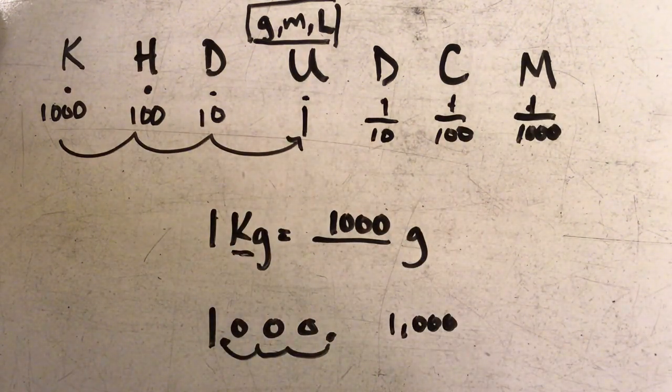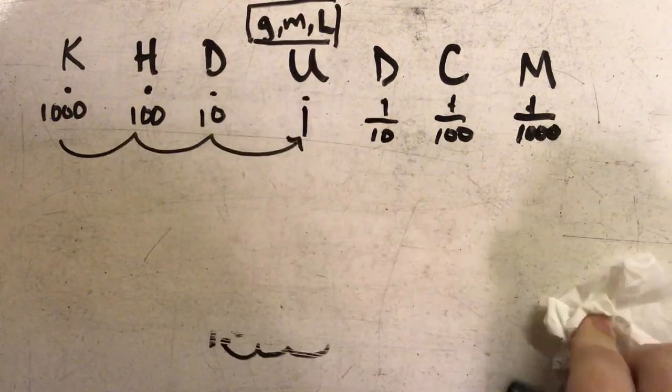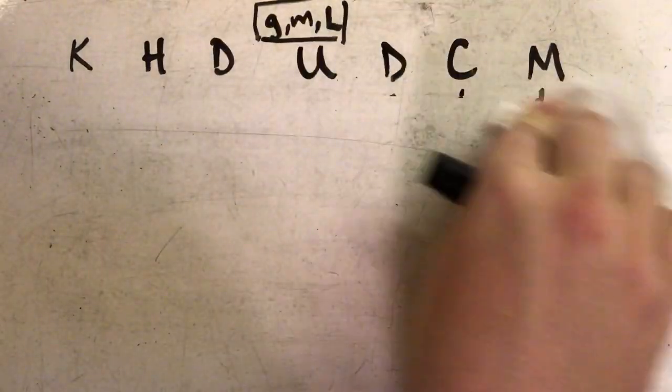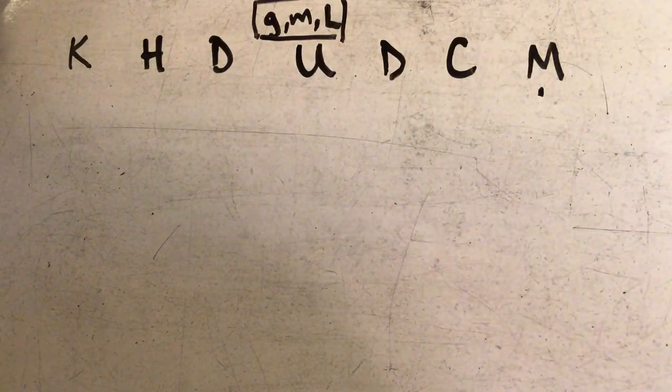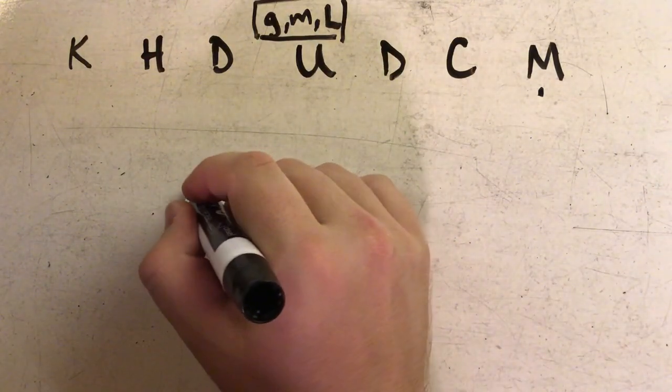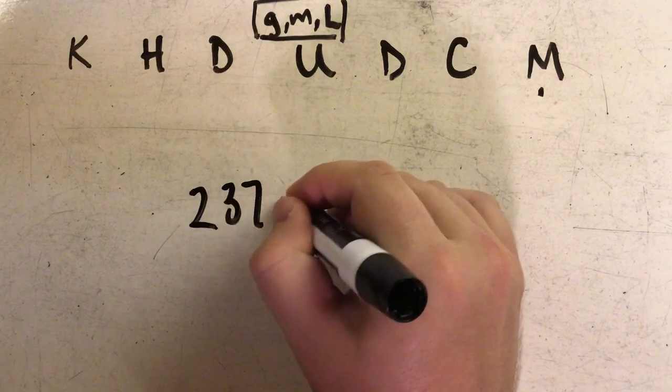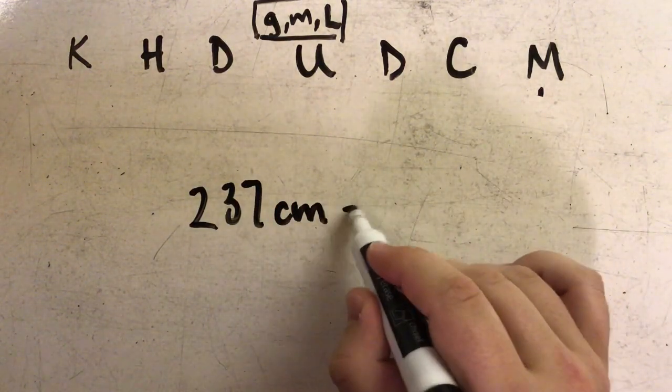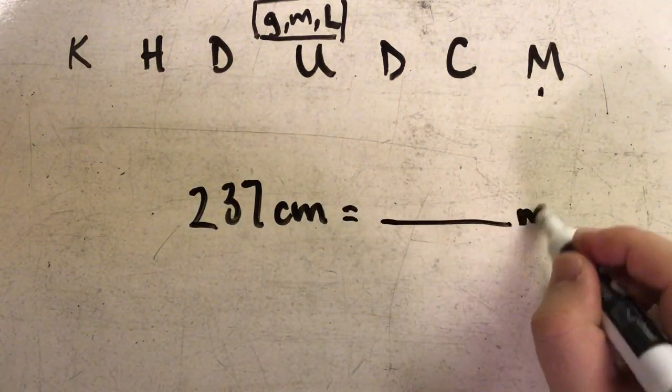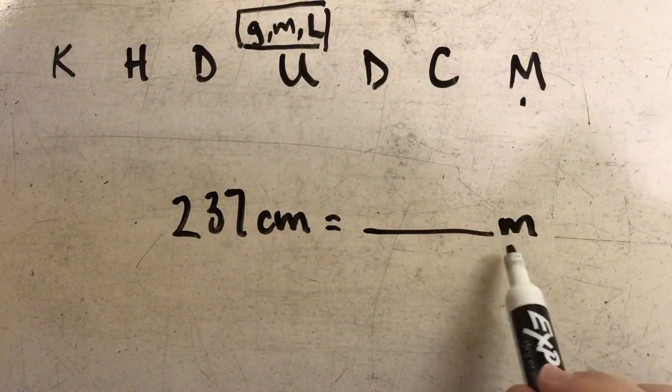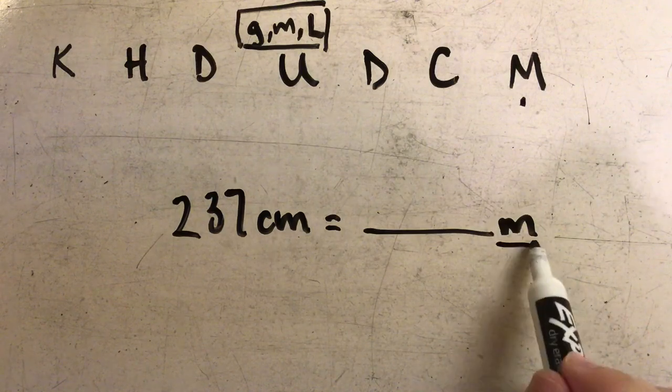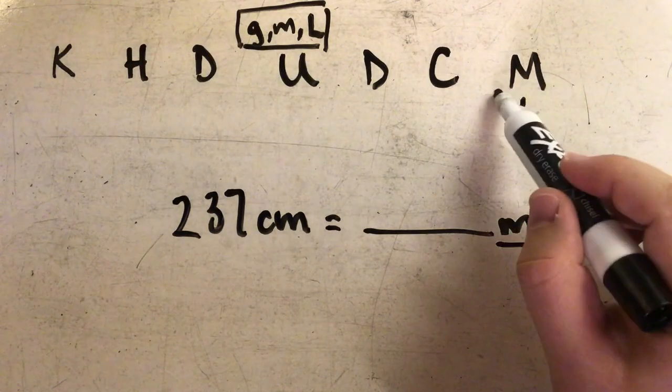Let's look at another example. This time we'll move from a smaller unit to a larger unit. So let's say that I have two hundred thirty-seven centimeters and I want to know how many meters that is. Just a side note: be careful not to confuse the M in meters with the M for milli up here.